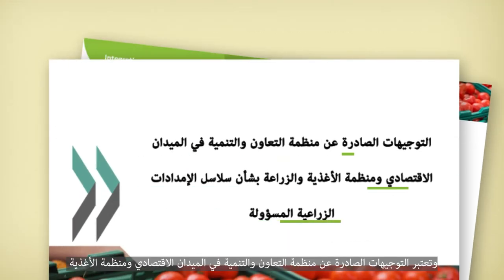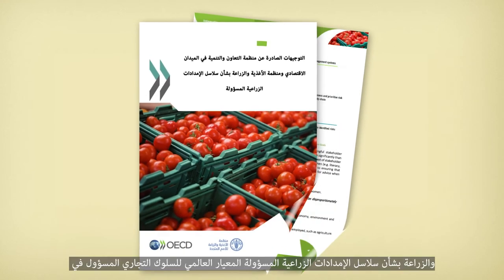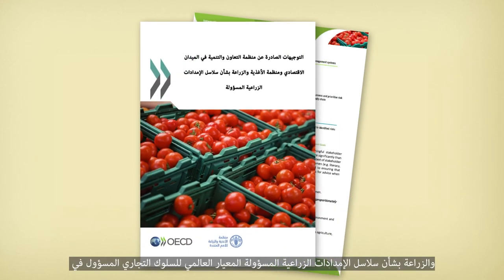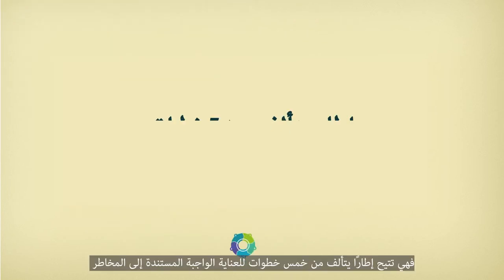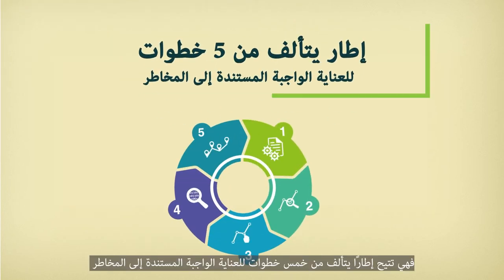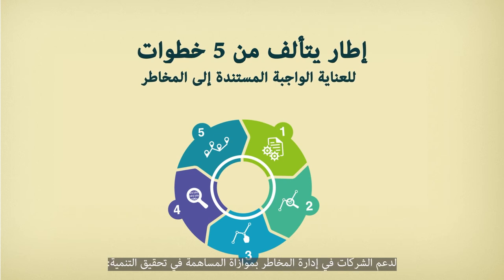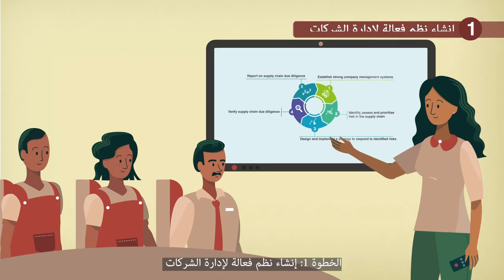The OECD-FAO guidance for responsible agricultural supply chains is the global standard for responsible business conduct in the agricultural sector. It introduces a five-step framework for risk-based due diligence to support companies in managing risks while contributing to development.